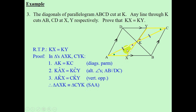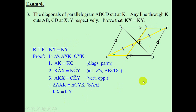If the two triangles are congruent, we can now conclude that KX is equal to KY, and that was our RTP — required to prove.